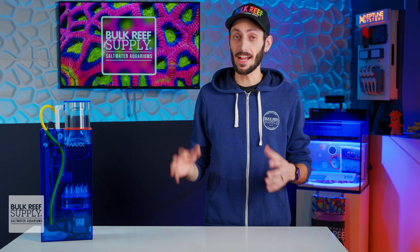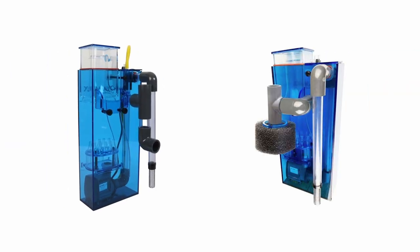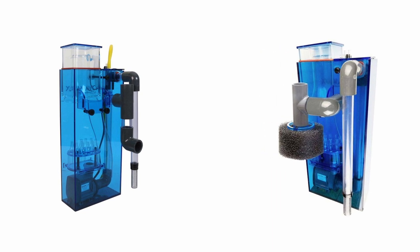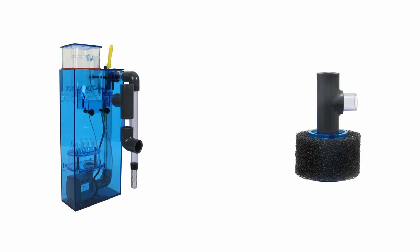This HOB 1.5 actually comes in two different versions. The standard version that I have here and also one that includes the optional bubble stopper attachment for the outlet, but fear not, even if you have the standard version, you can always pick up the bubble stopper separately if you need it.